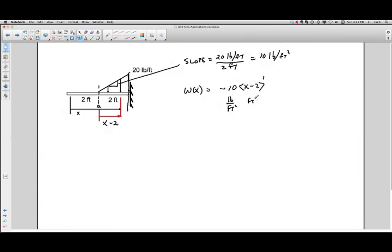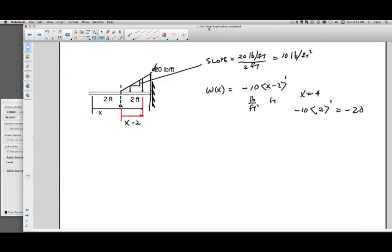So when x is equal to 1, w of x is equal to 0. When x is equal to 3, it's going to be equal to 10. And when x is equal to 4, I'll have that inside term is going to be a plus 2 to the first power, so I'm going to have a minus 20, which is exactly what I've got over here on the left hand end. So we will do some more with the shear and bending moment equations on the next one.